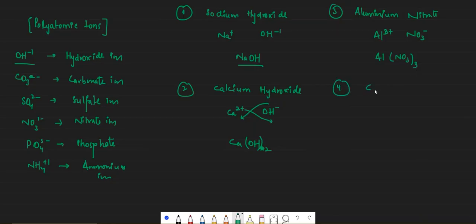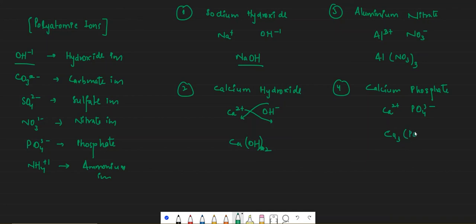Now let's do calcium phosphate. Calcium is Ca 2+ and phosphate is PO4 3−. So 3 goes here and 2 goes here, giving Ca3(PO4)2. The 2 is multiplied with the whole phosphate group PO4, so it goes in brackets. That is the chemical formula of calcium phosphate.